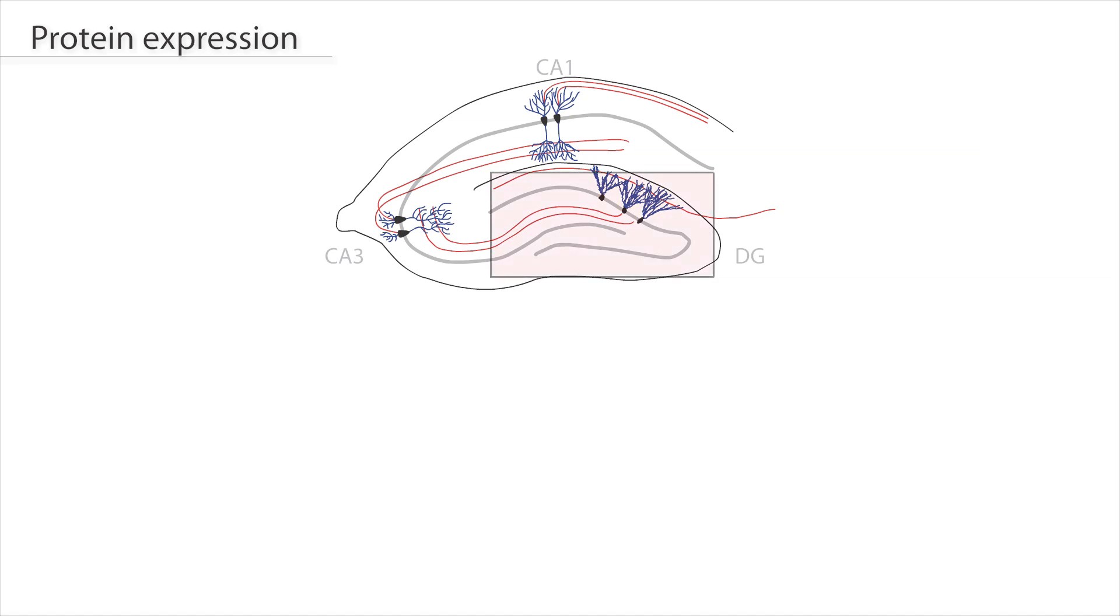Granule cells of the dentate gyrus, the main input region of the hippocampus, are activated by the binding of glutamate to AMPA receptors.